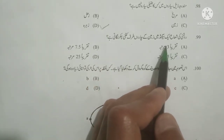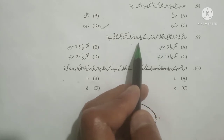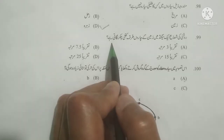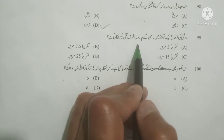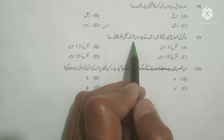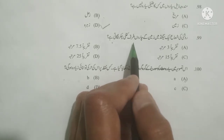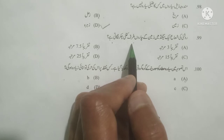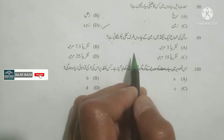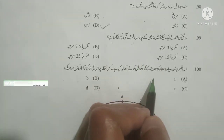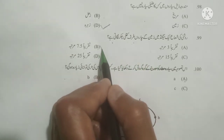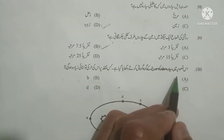Next question: Roshni ki shwaan ek second mein zameen ke charo taraf kitni chakkar lagati hai? How many times does a ray of light revolve around the earth in one second? As you know, a ray of light revolves around the earth approximately 7.5 times per second. Options given: 3 times, 7.5 times — 7.5 times is correct.